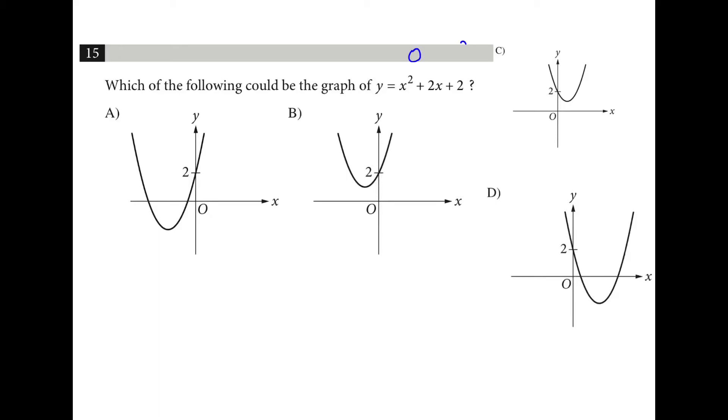So if you plug in a zero for x, you're going to get two for y, which all of these have. If you check the discriminant, b squared minus 4ac, you'll find that this is 4 minus 8. So there's no real zeros, so that rules out a and that rules out d.